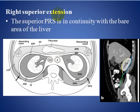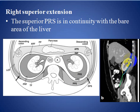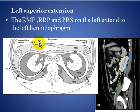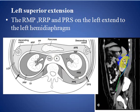Right superior extension: the superior pararenal space is in continuity with the bare area of the liver, as we see in this section. Left superior extension: the anterior retroperitoneal plane, posterior retroperitoneal plane, and the perirenal space on the left side extend to the left hemidiaphragm, as we see in this section.